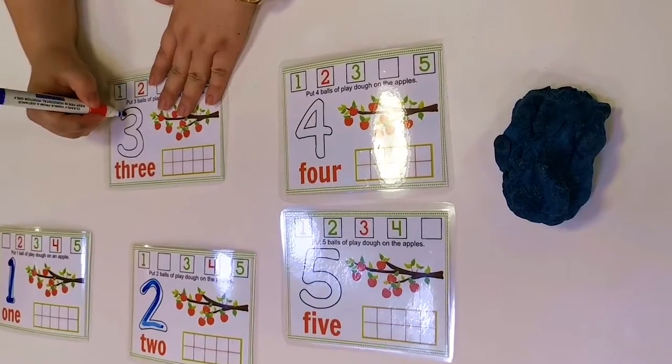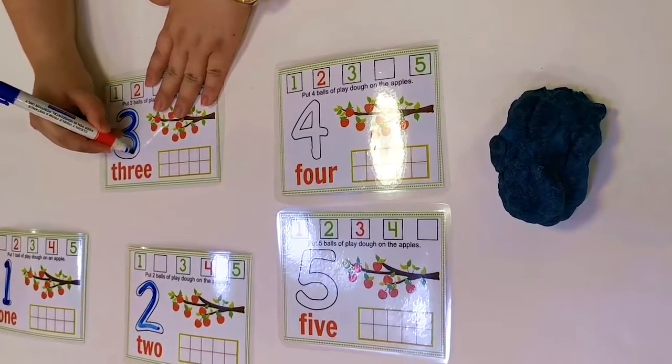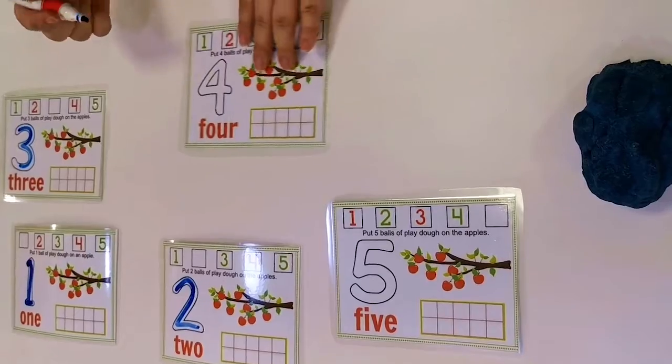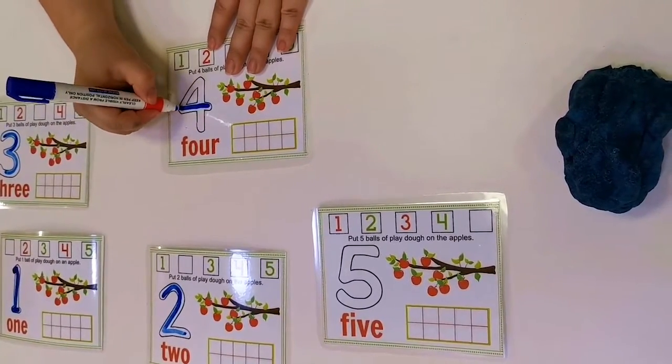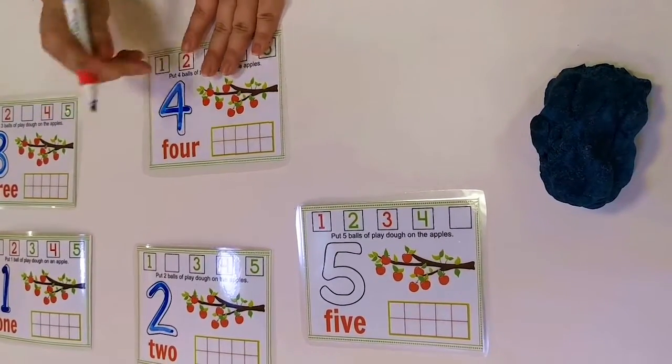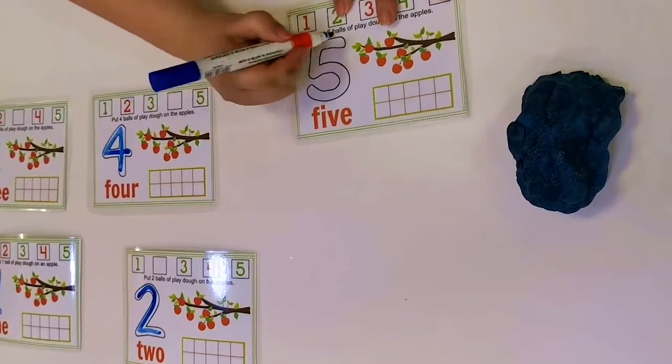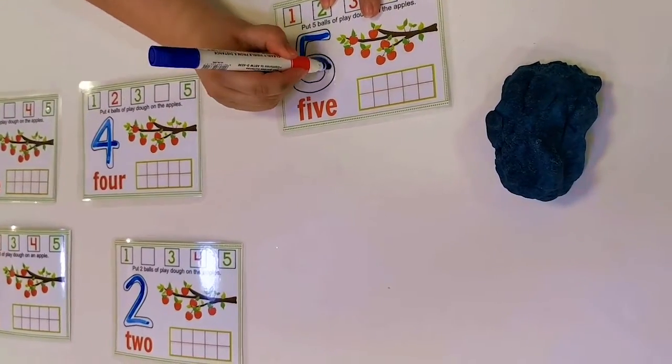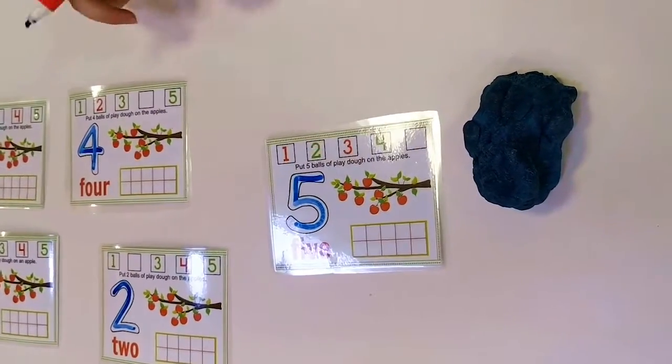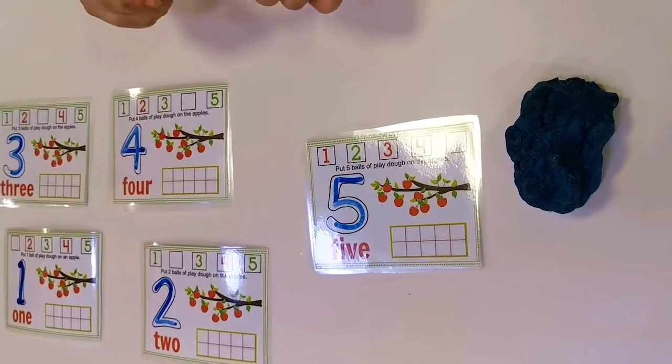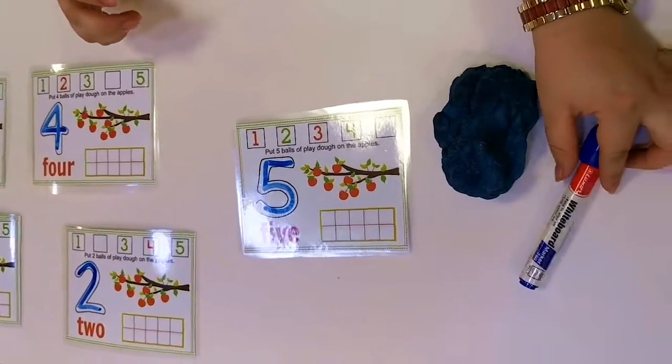Number 3. Number 4. Number 4 and number 5. Great job! Now we are going to put our marker on the side and we are going to put apples.